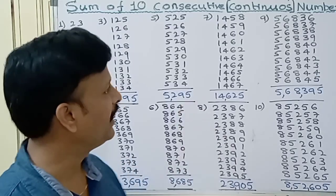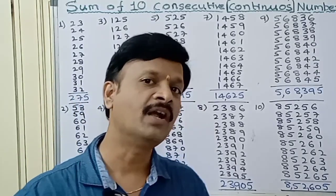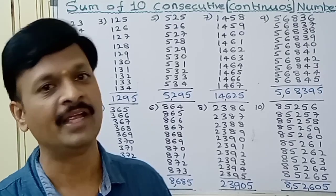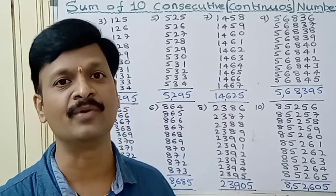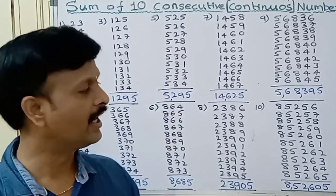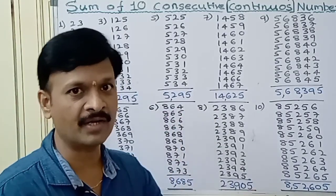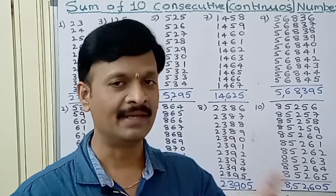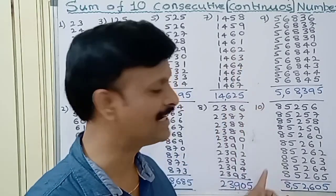Here I have taken only positive numbers. If you want to take negative numbers, completely you can take that. They must be consecutive numbers, 10 consecutive numbers. You can take negative numbers, zero, and positive numbers also. They must be continuous and you can apply this technique and get the answer within 3 seconds.